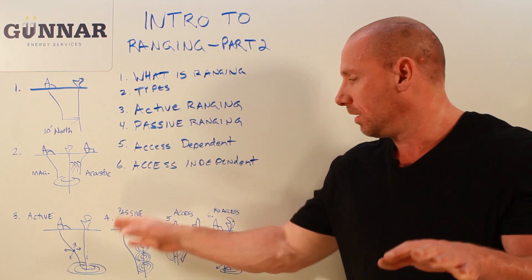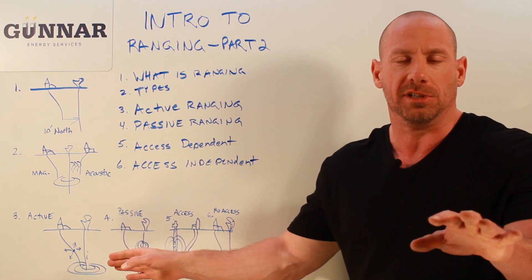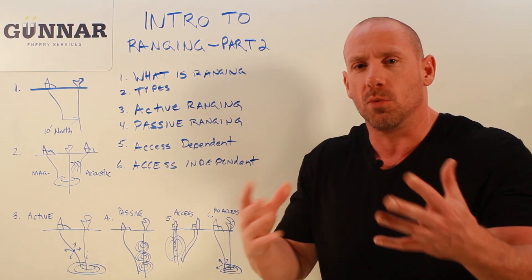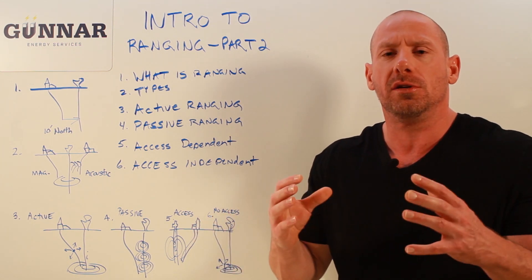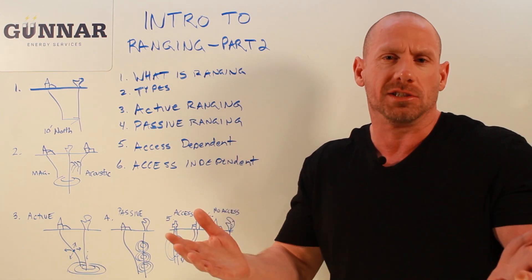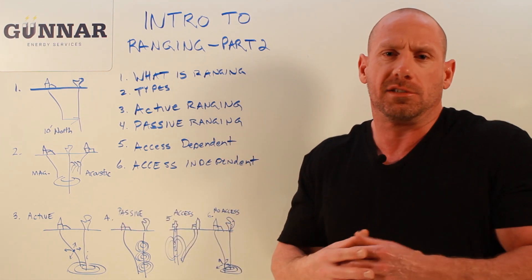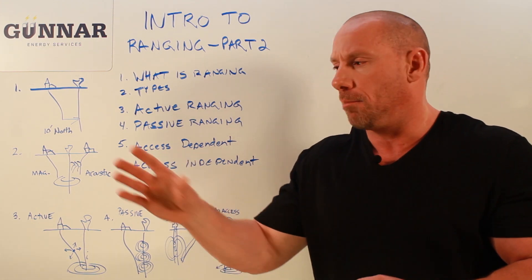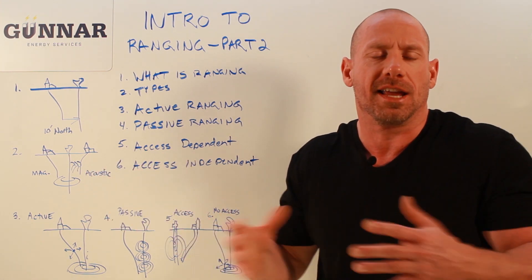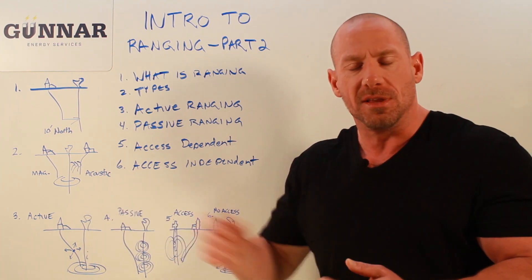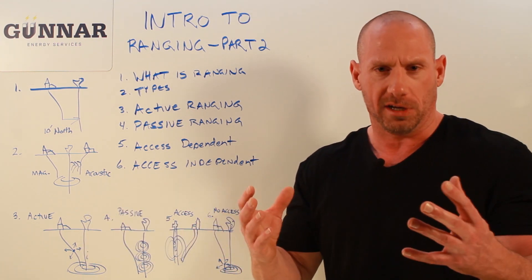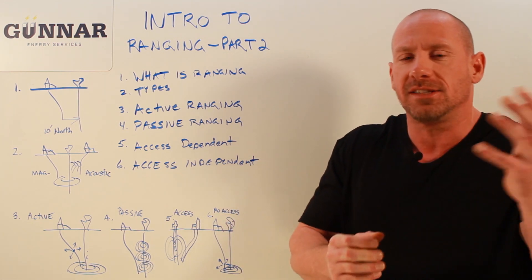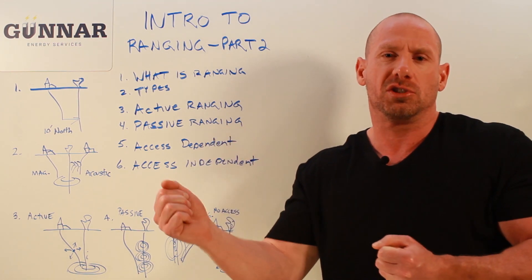Now in illustration number four, it's the same situation — it's a relief well — but now we're going to use passive magnetic ranging. So what's passive? We're going to use the residual magnetism of the drill pipe. It's already present. We didn't, at the moment that we took the measurement, create that. It was present just by virtue of the fact that the casing or the drill pipe in the target well is a ferromagnetic material. So we're looking for that magnetic field attributable to that. That's active ranging versus passive ranging.